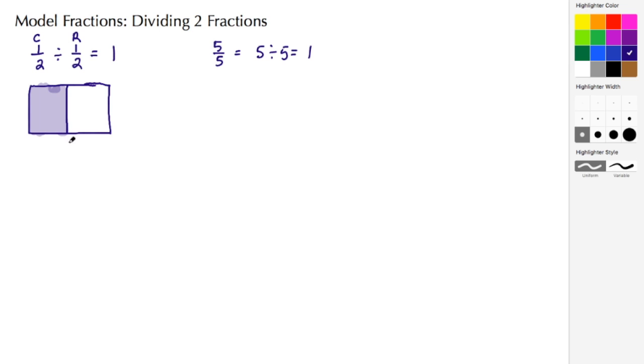And then we go to the second fraction. The second fraction says that I need to have two rows, and I see that based on the denominator. So I'm going to go ahead and draw in a line here. Now you see I have two rows.